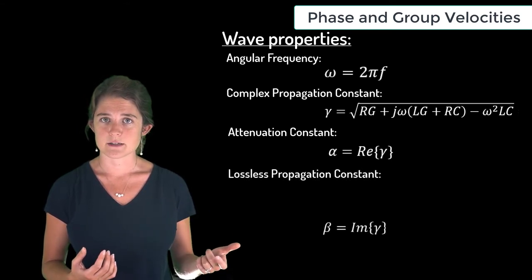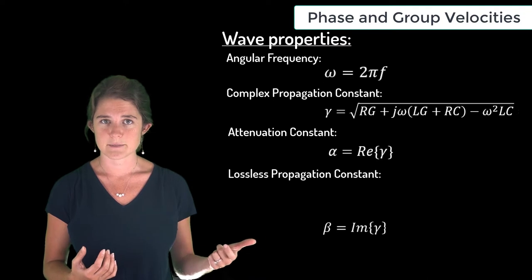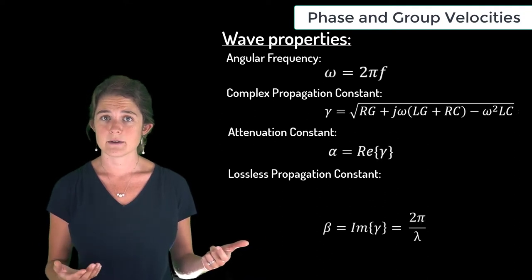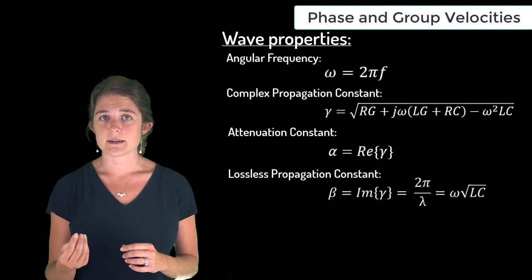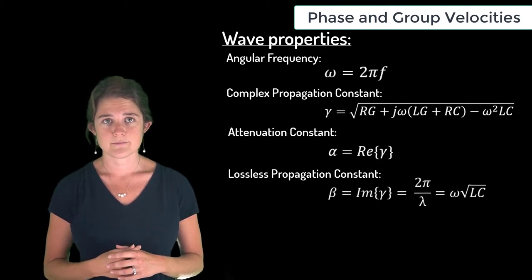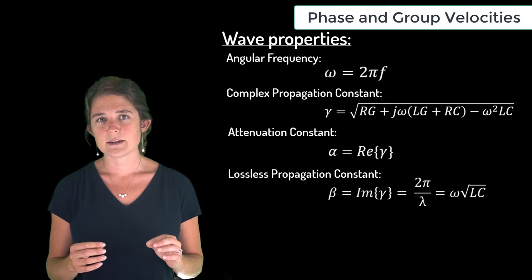And beta, the lossless propagation constant, which is equal to the imaginary part of gamma, or 2π over lambda. If the line is lossless, beta is also equal to omega times the square root of LC.